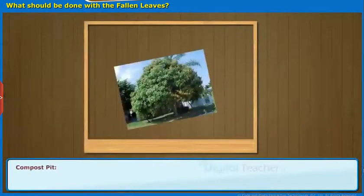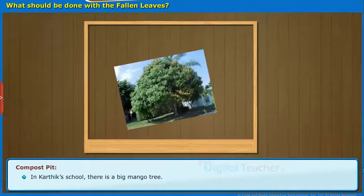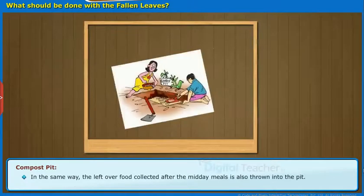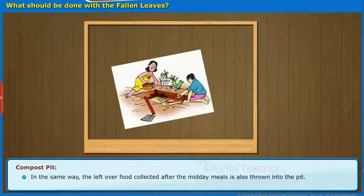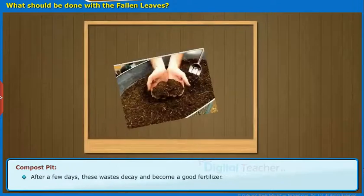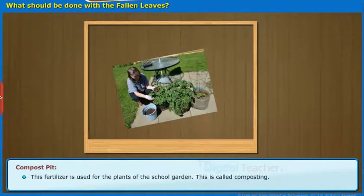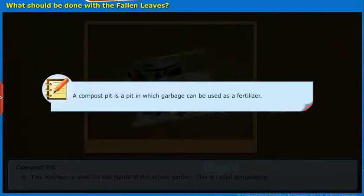In Karthik's school, there is a big mango tree. The members of the school sweeping committee sweep all the fallen leaves and papers daily and throw them into the pit. In the same way, the leftover food collected after the midday meals is also thrown into the pit. After a few days, these wastes decay and become a good fertilizer. This fertilizer is used for the plants of the school garden. This is called composting. Make a note: a compost pit is a pit in which garbage can be used as a fertilizer.